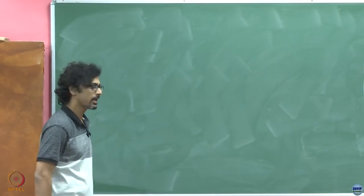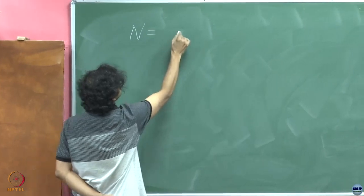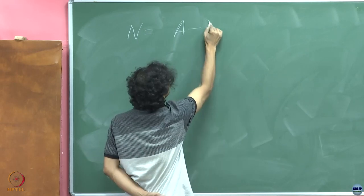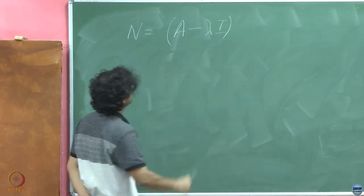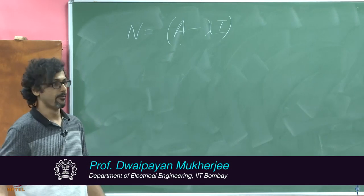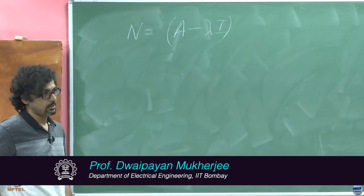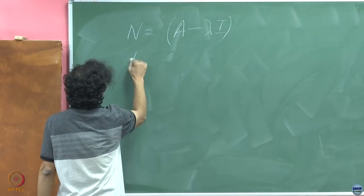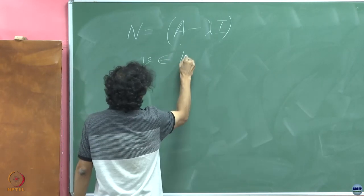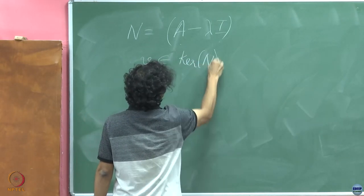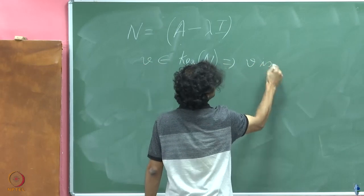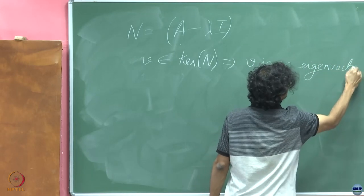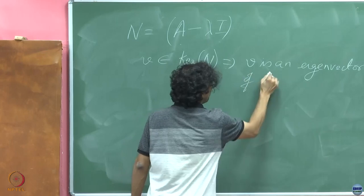Remember what n was. N was A minus lambda I. So what can you say about any object that belongs to the kernel of A minus lambda I? So v belongs to kernel n implies v is an eigenvector of A, is it not?